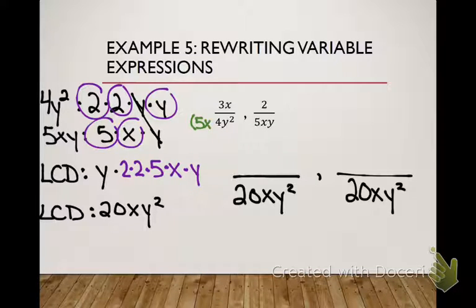Do I need to multiply by a Y? No, you already have a Y. I already have a Y squared down there, so I'm good. So I have to multiply the bottom by 5X to get to my new denominator. So what does that mean? I multiply the top by 5X. What's 5X times 3X? 15X squared.